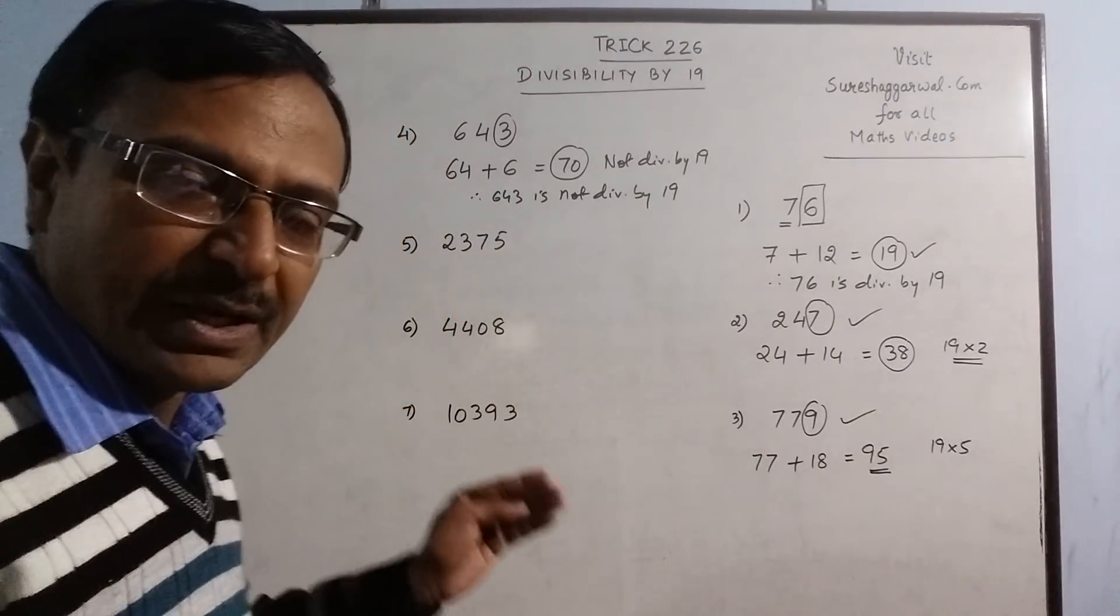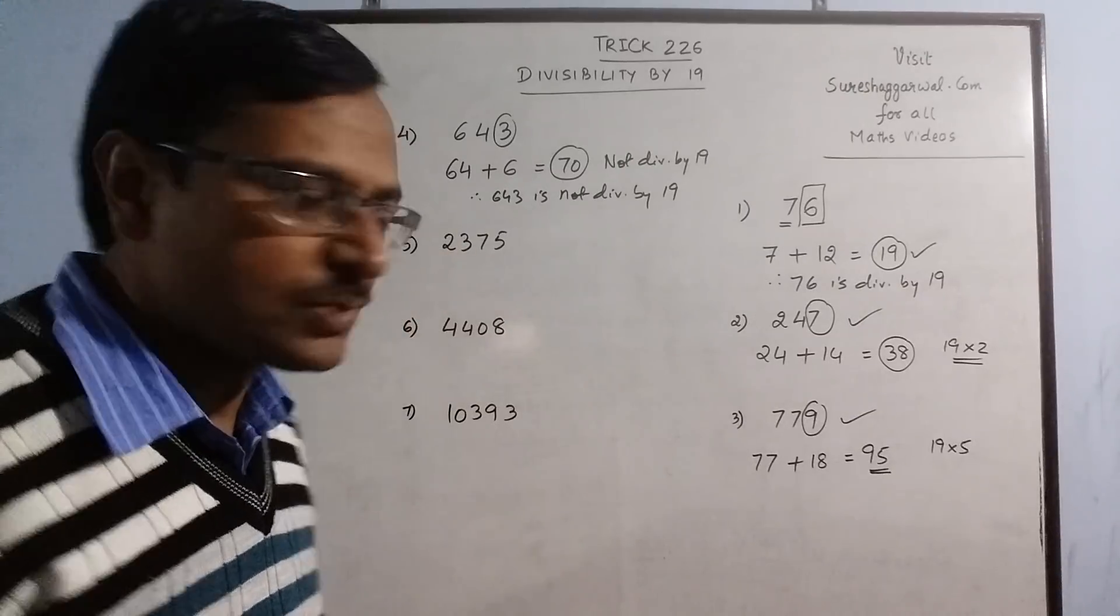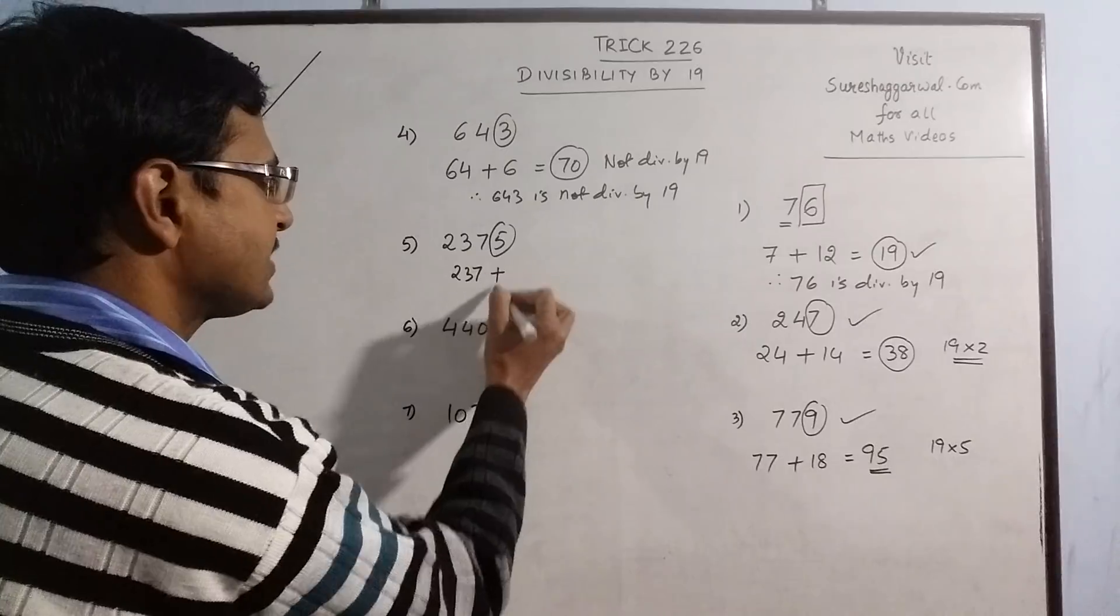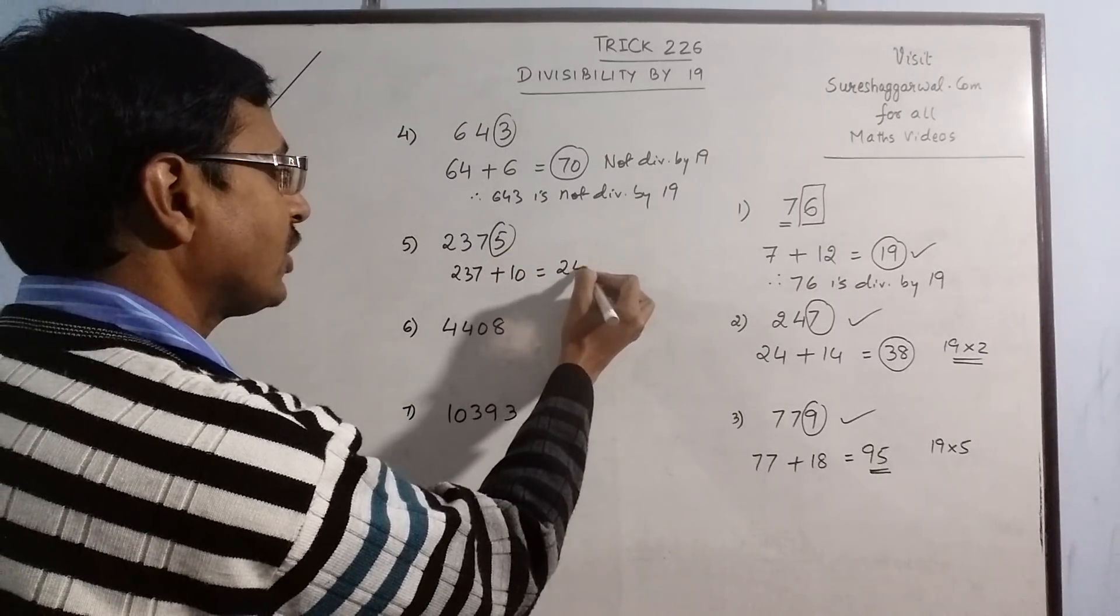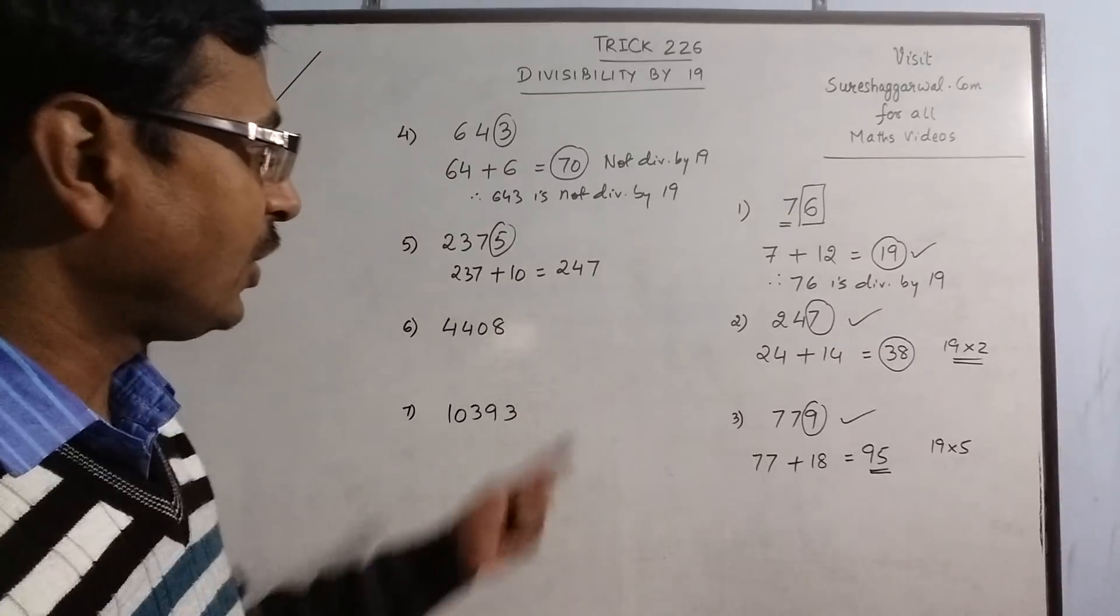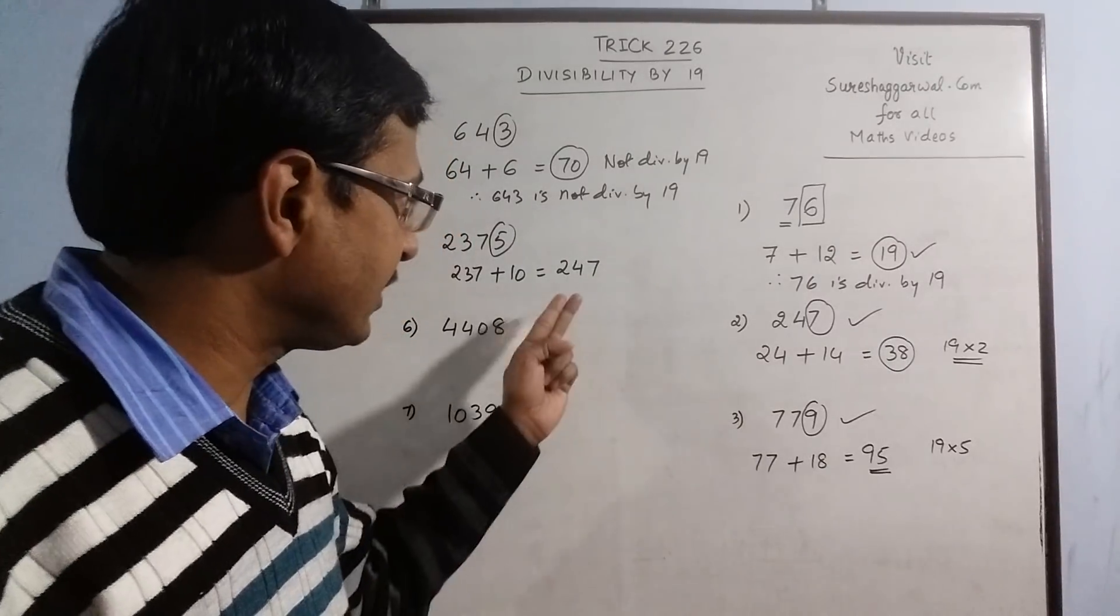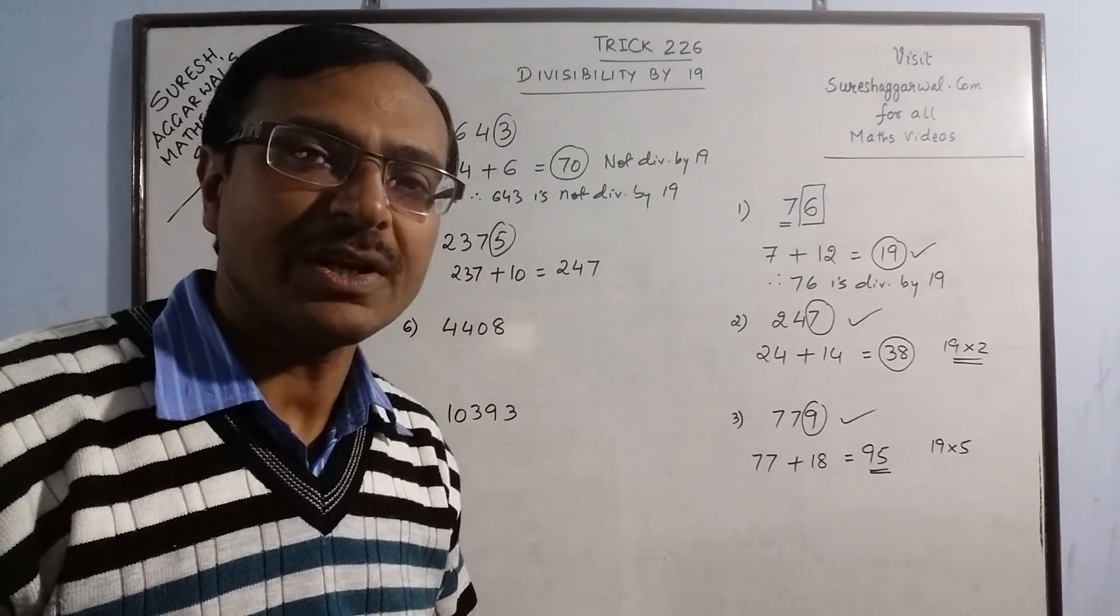Now take some bigger example. 2375. Now see, 5. So 237 plus double of 5 is 10, so you get 247. Now we obtain a 3-digit number, which again is difficult to identify whether this number is divisible by 19 or not. So you can repeat the procedure again.